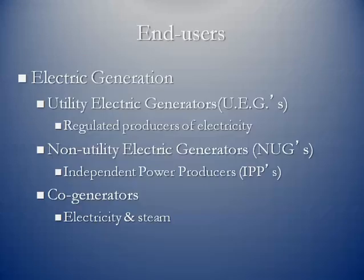We'll talk about electric generators — there are two different groups. You've got the electric utility generators, which are regulated producers of electricity, either federally regulated or regulated by the respective states. And then you have the non-utility electric generators, the so-called independent power producers, also known as merchant power companies. Another group is known as co-generators: companies whose plants actually produce both electricity and steam, where steam is an actual commercial commodity that can be shipped by pipeline to nearby facilities such as food processing or crude oil refineries.